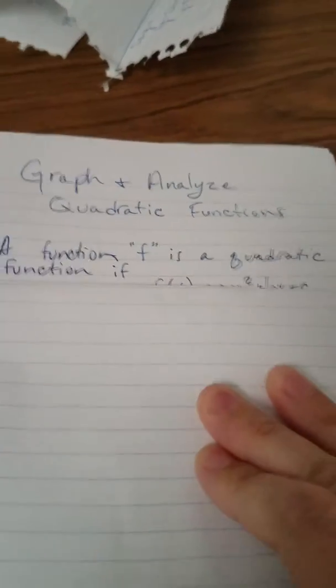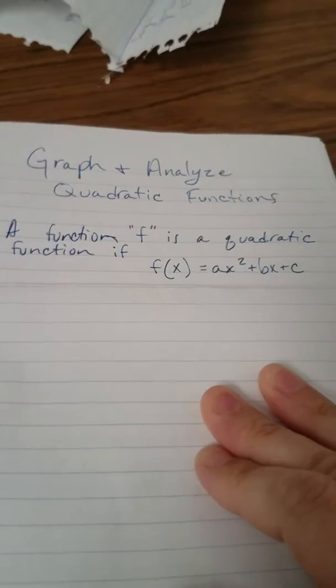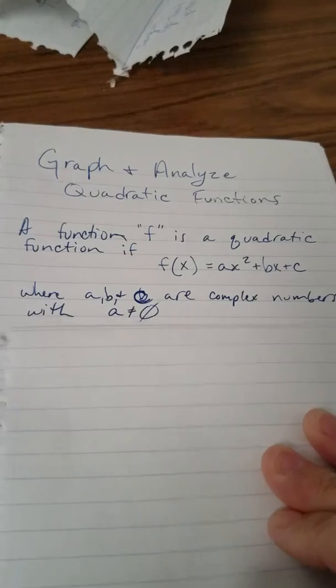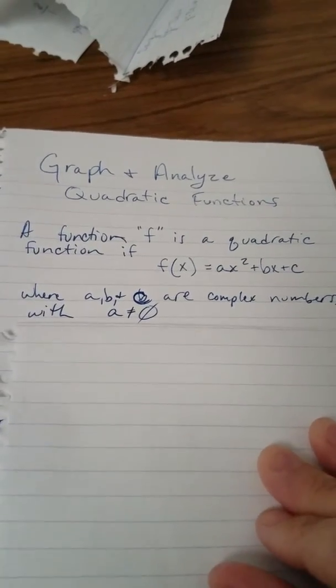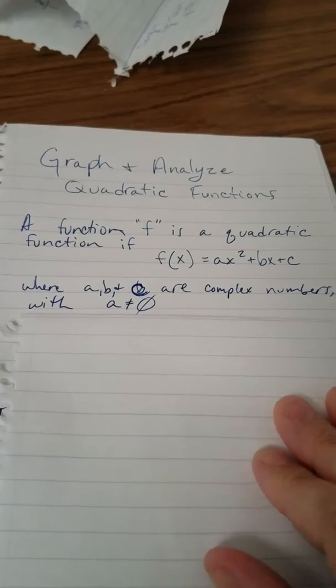A function f is a quadratic function if f(x) equals ax squared plus bx plus c, where a, b, and c are complex numbers with a not being equal to zero.